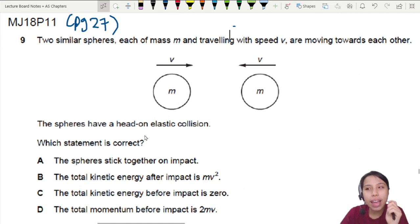The spheres have a head-on elastic collision. Which statement is correct? Now keep in mind, elastic collision, there are certain properties there. Momentum is still conserved, but kinetic energy is also conserved.